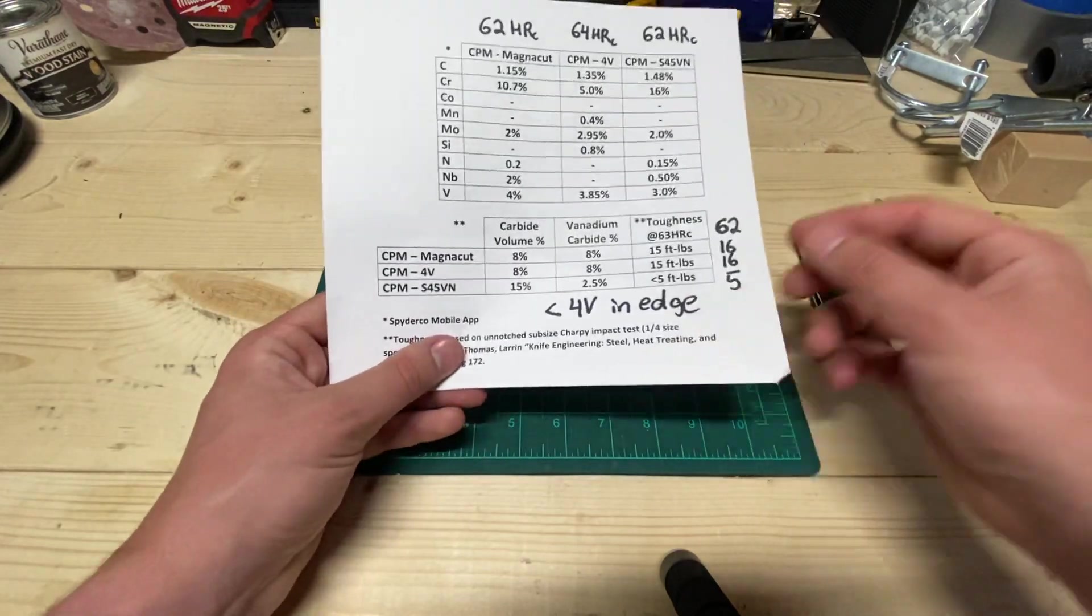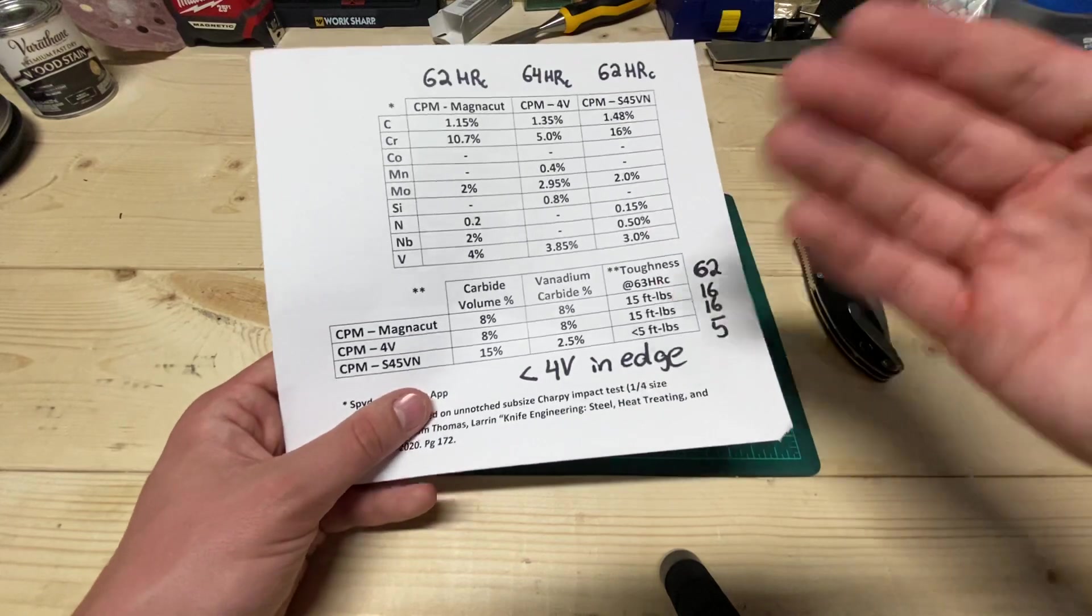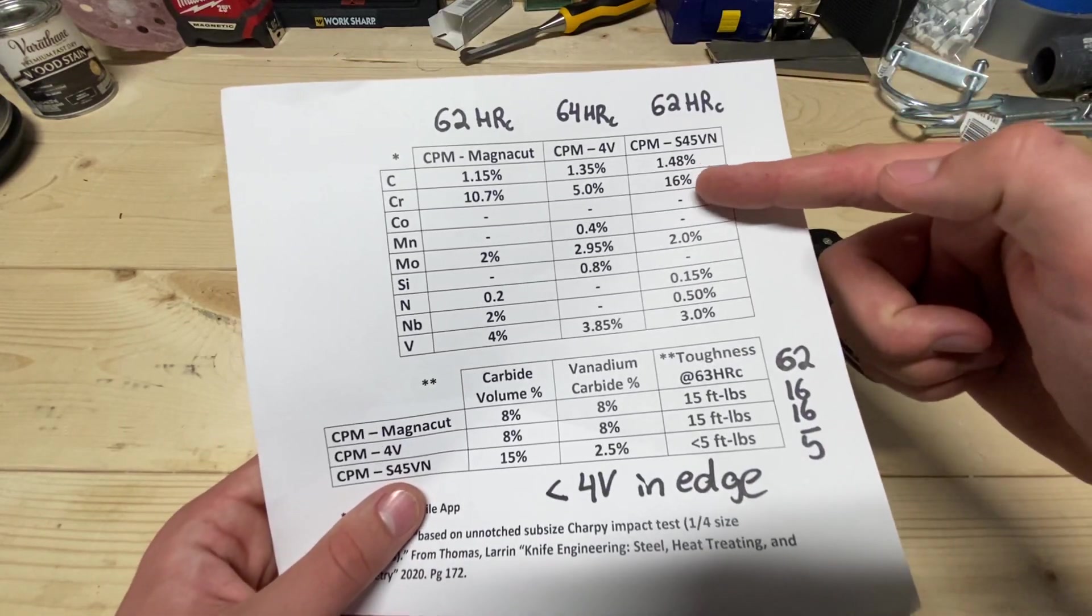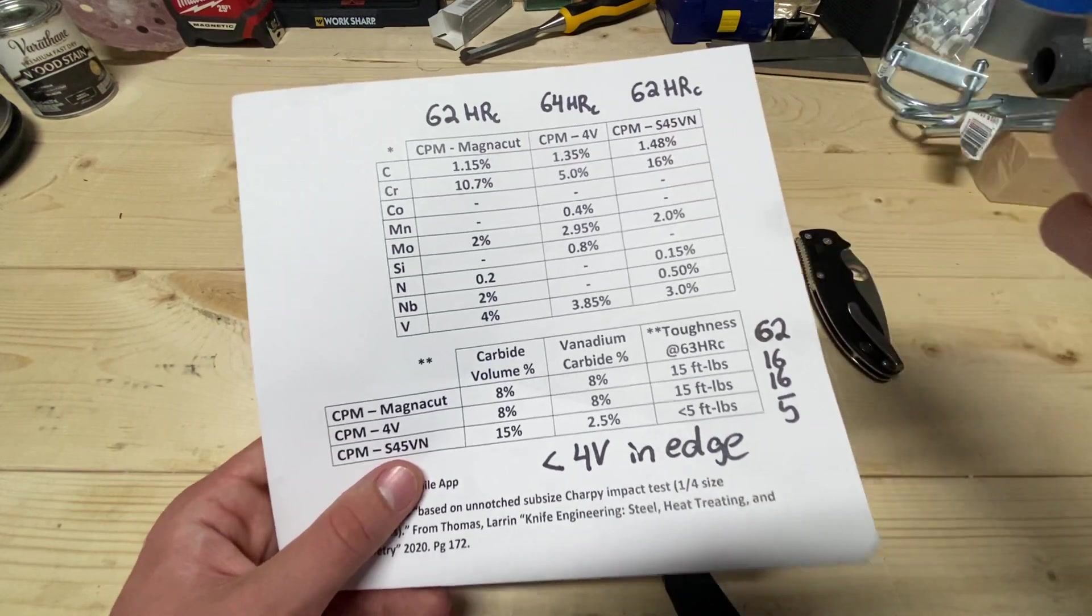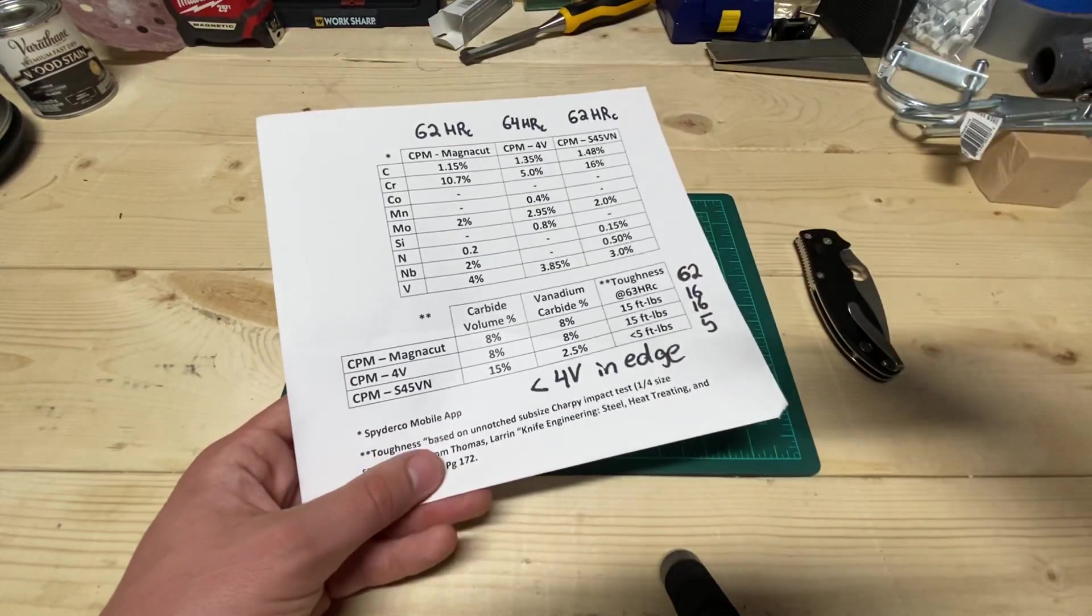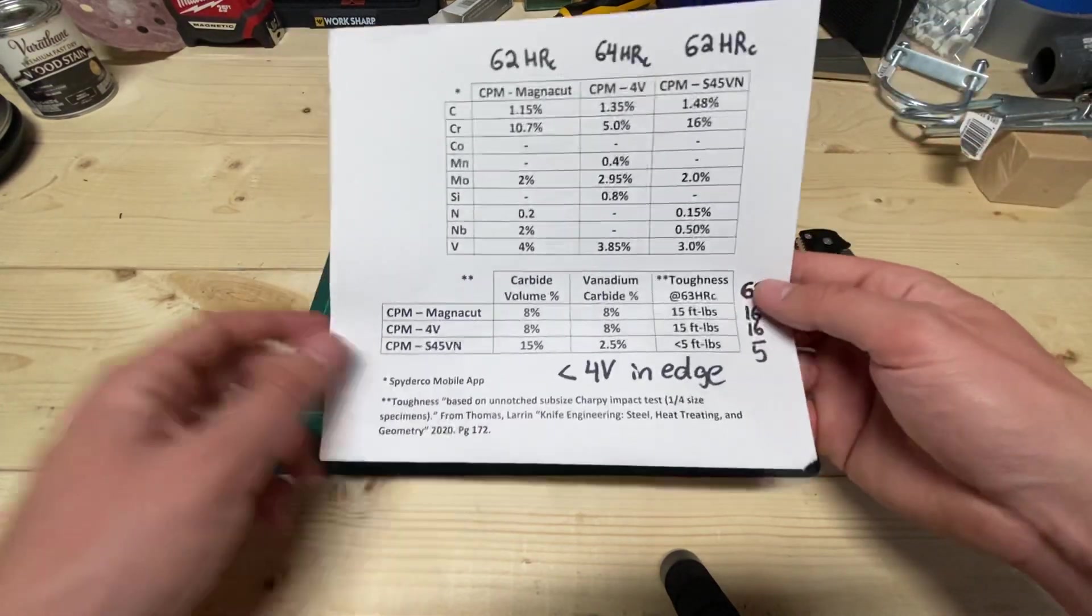And that's the major drawback to stainless steels, is that in order to make steel stainless, traditionally we've been adding all of this chromium like in S45VN. The trouble is, is that when chromium makes carbides, you get a huge reduction in terms of toughness for that amount of carbide.